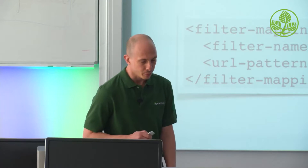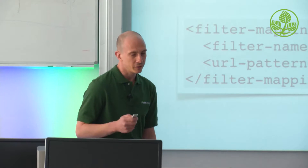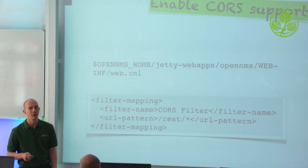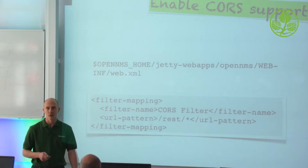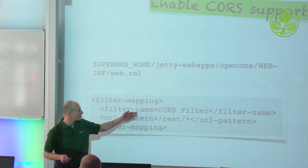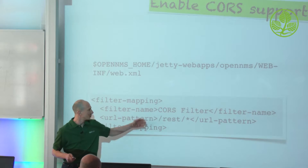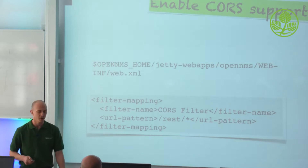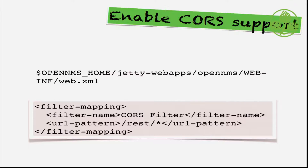CORS support is pretty easy. You just have to uncomment a block in the web.xml of the OpenMS web application. You remove the comments, restart the web application, and then you're done — you're able to query the REST API from a different origin, from the Grafana application.